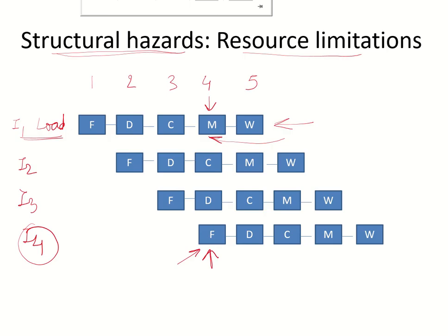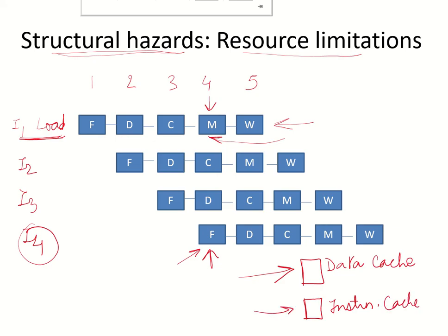This problem can be resolved if we have multiple instances of the same resource. For this example, if we had a separate data cache and a separate instruction cache, then the memory access for the load instruction can be handled through the data cache. So having a split cache architecture where there are multiple resources, these kinds of stalls can be resolved.